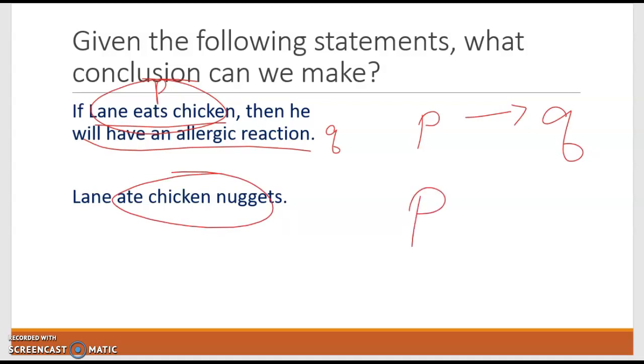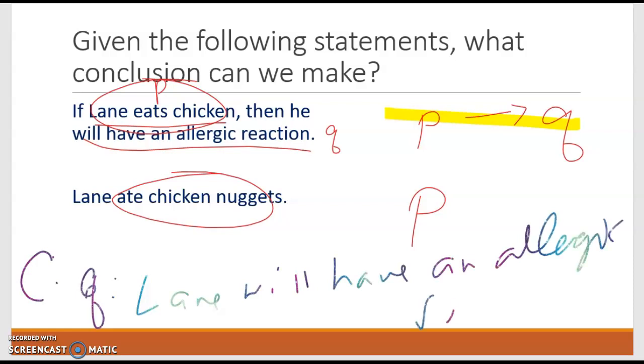So think this through. If we know that if P occurs, it leads to the statement of Q. So therefore, in statement two, we know that P has occurred. Lane ate chicken. Therefore, the conclusion would be Q, also known as Lane will have an allergic reaction.